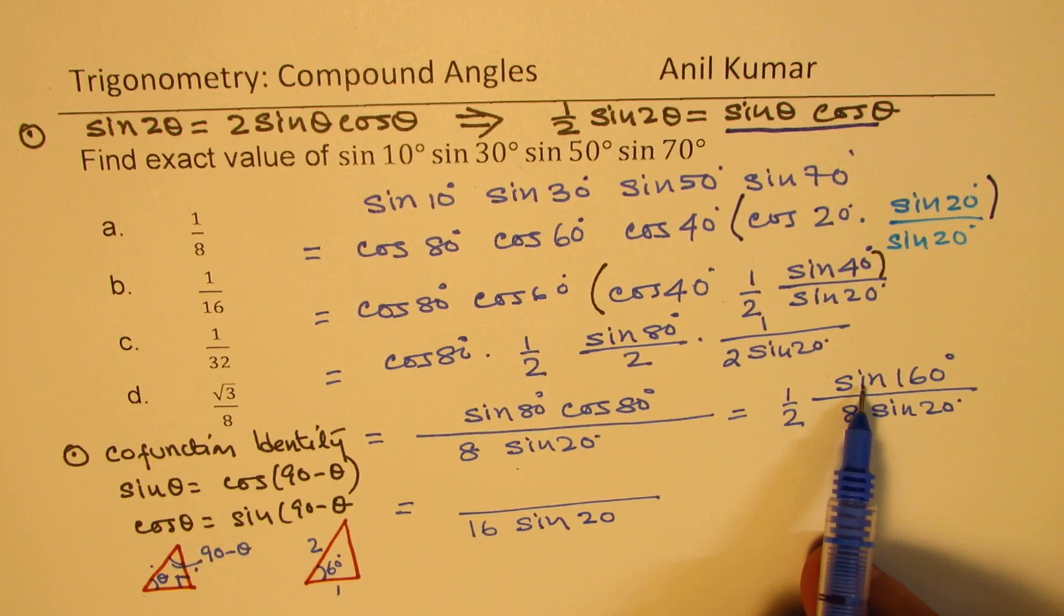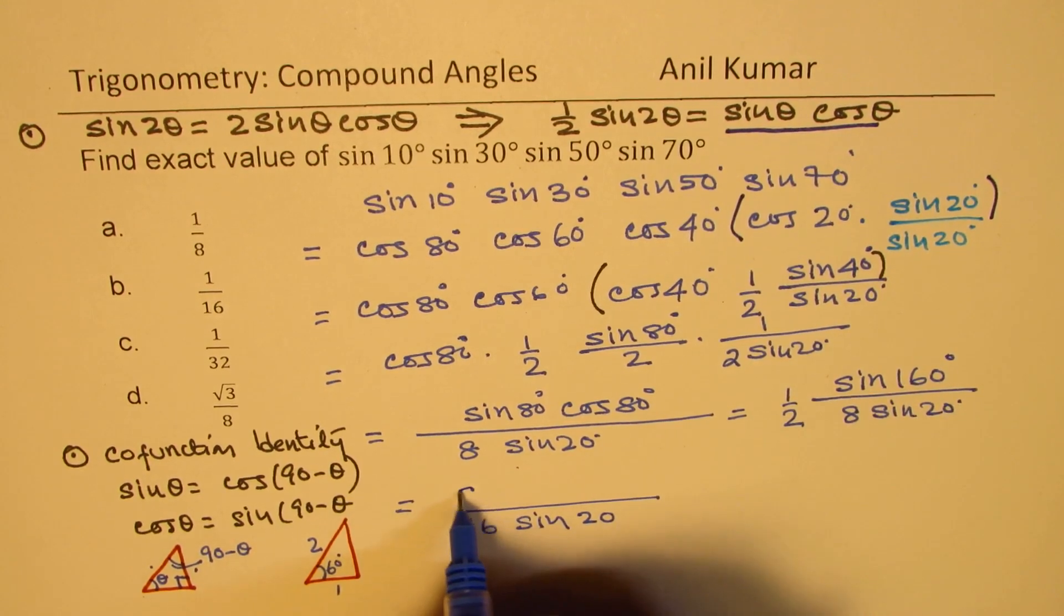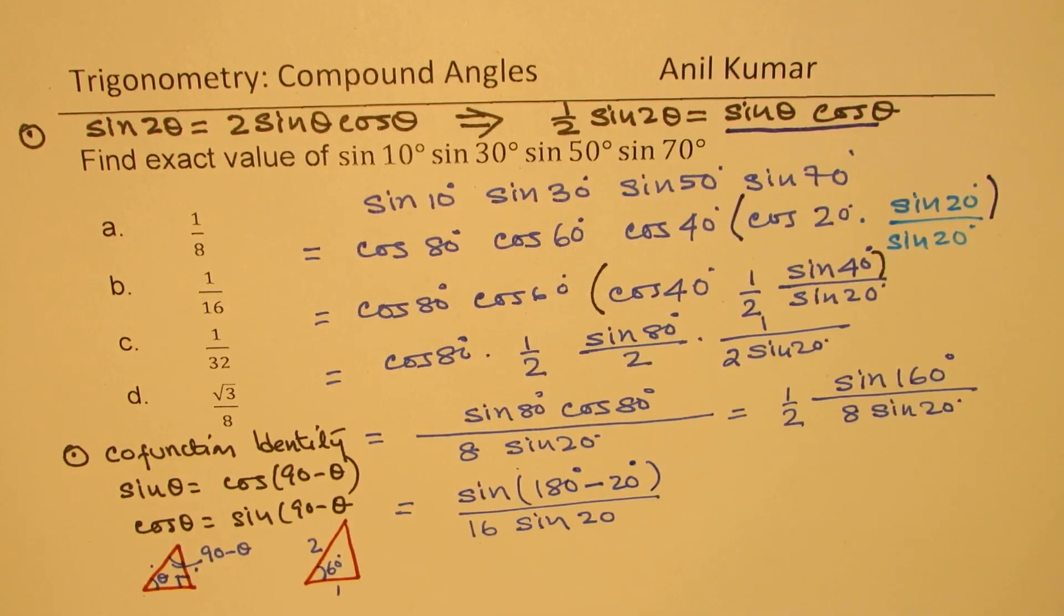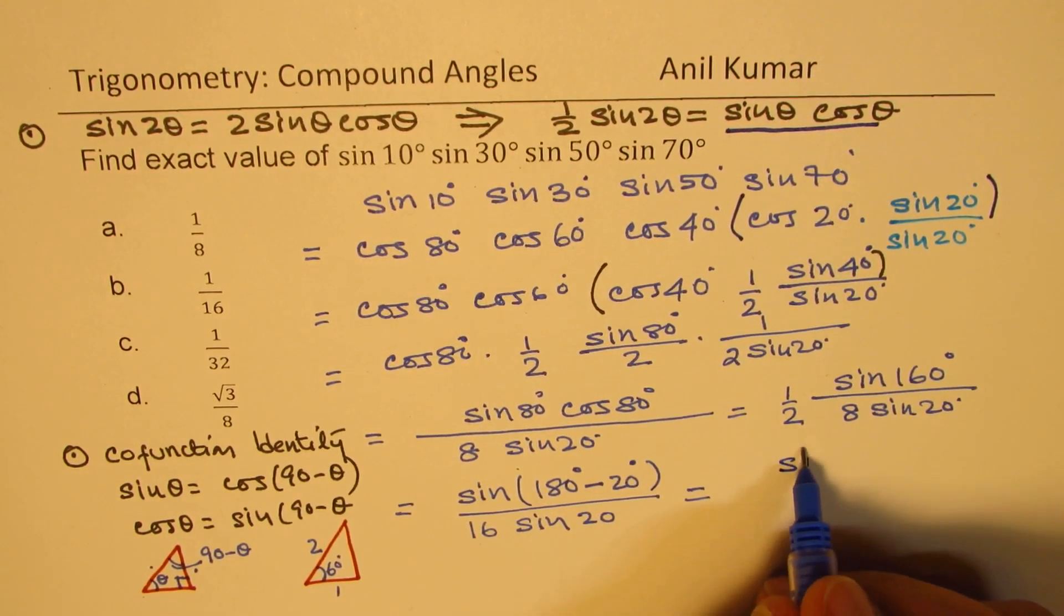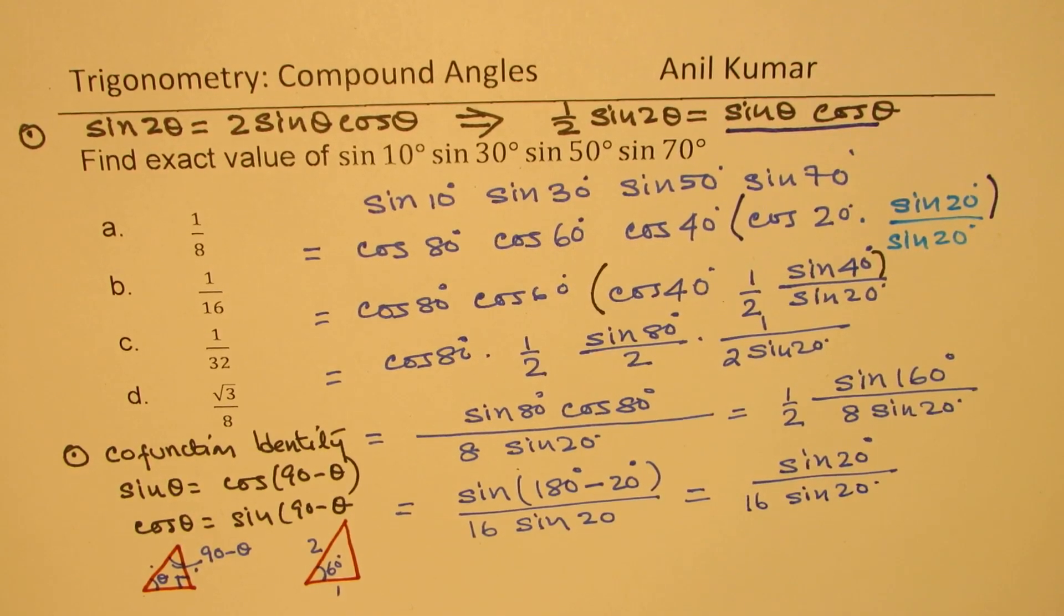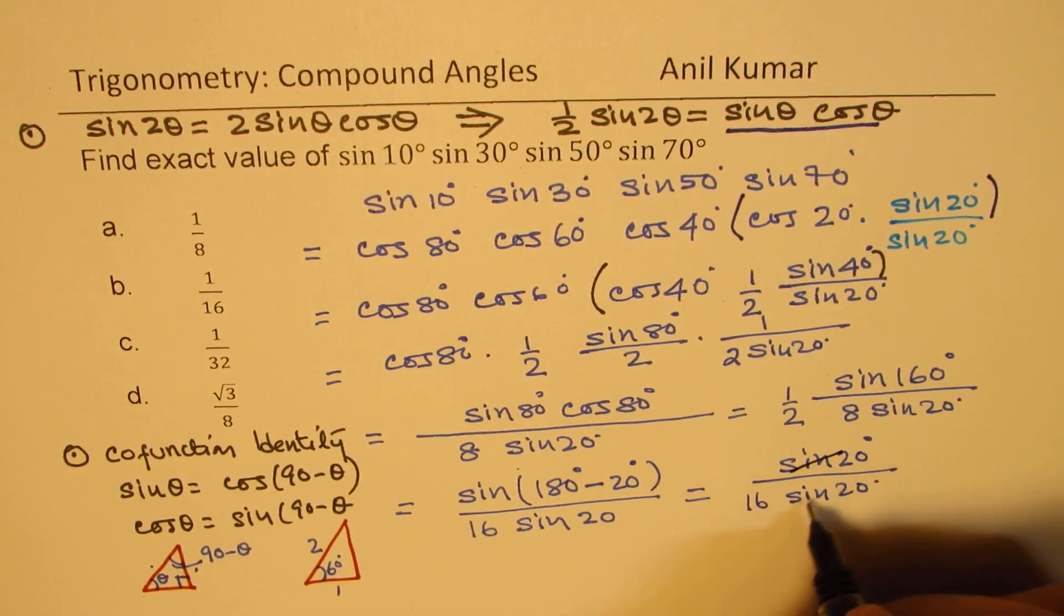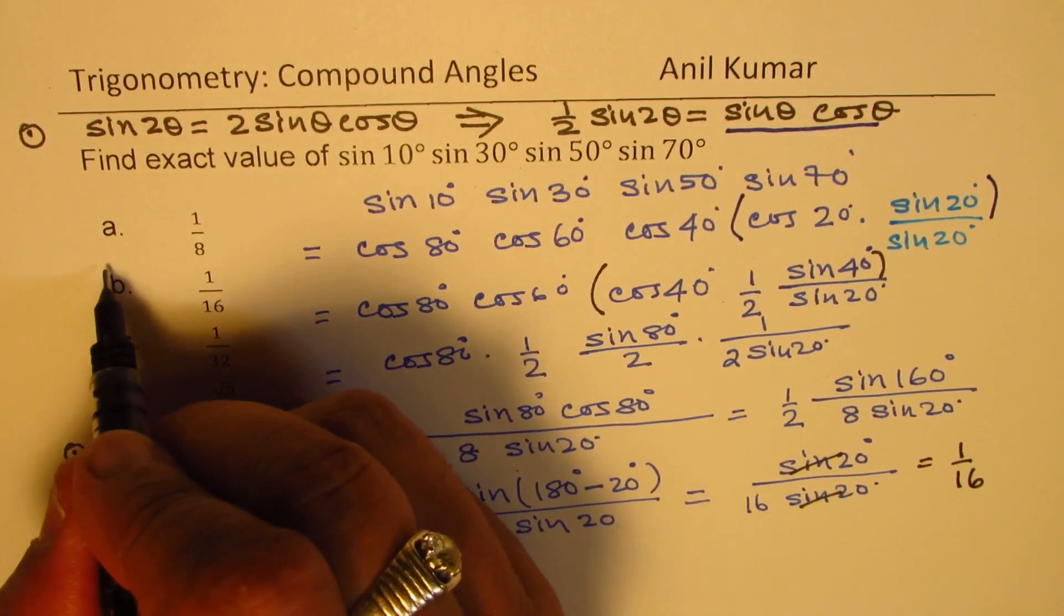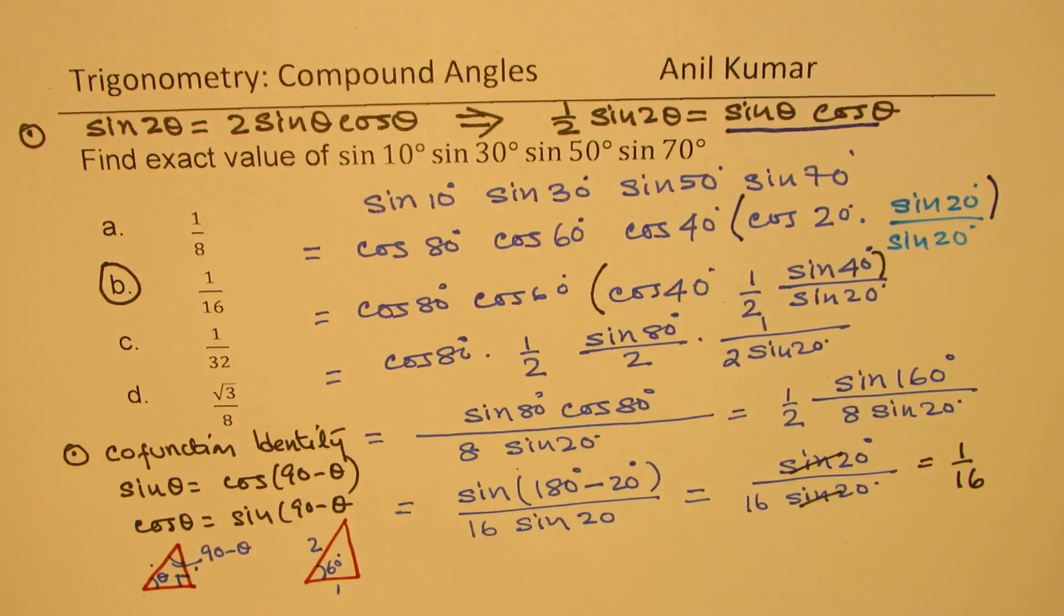In the numerator, we have sin 160 degrees, which we could write as sin of 180 degrees minus 20 degrees. That is 160 degrees. Now, what is sin of 180 minus 20? It is sin 20. So, we get sin of 20 degrees divided by 16 sin 20 degrees. Sin 20 sin 20, cancel, and you are left with 1 over 16. So, we have option b as the right option.